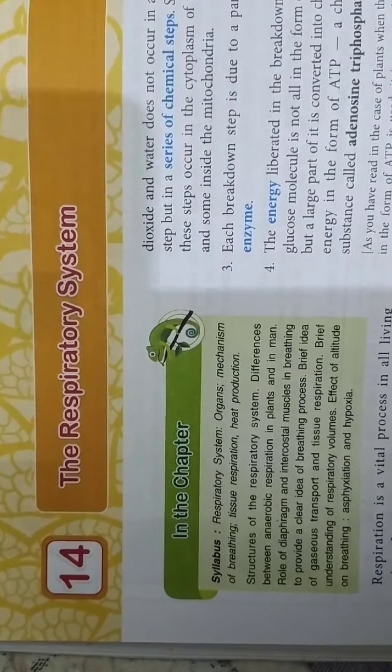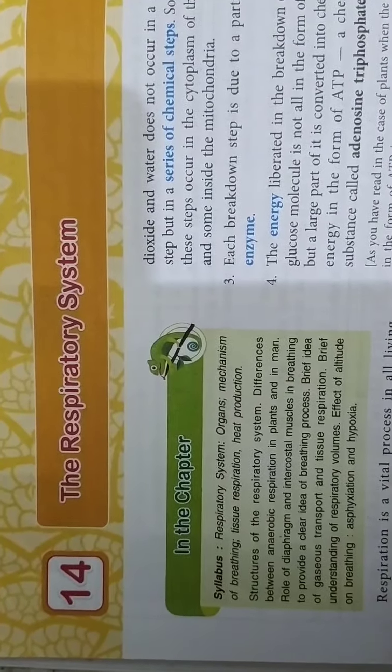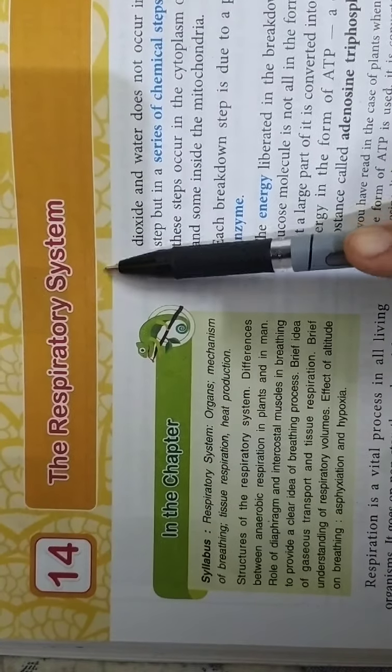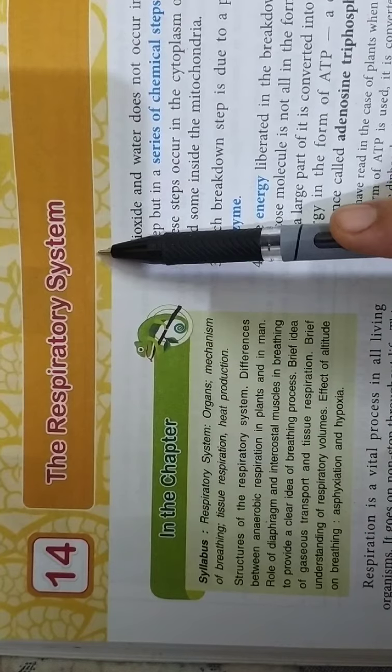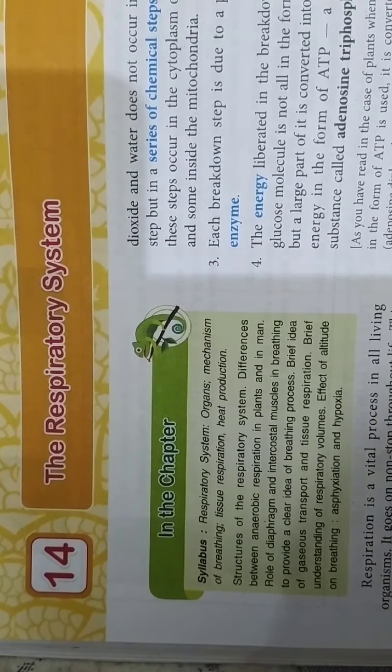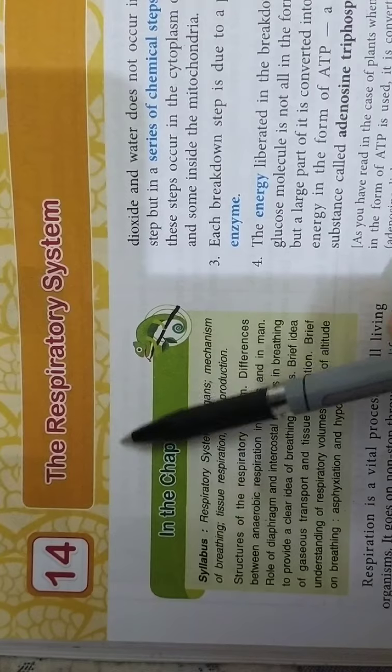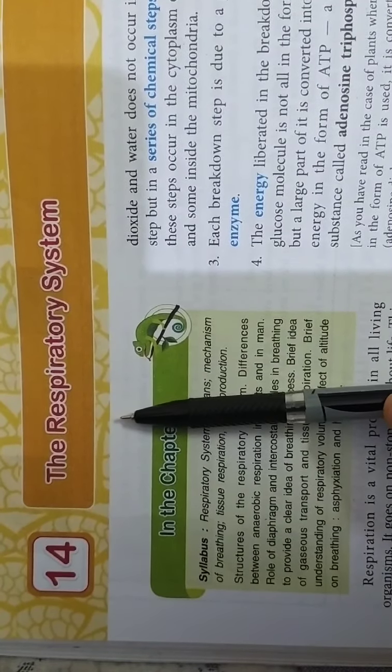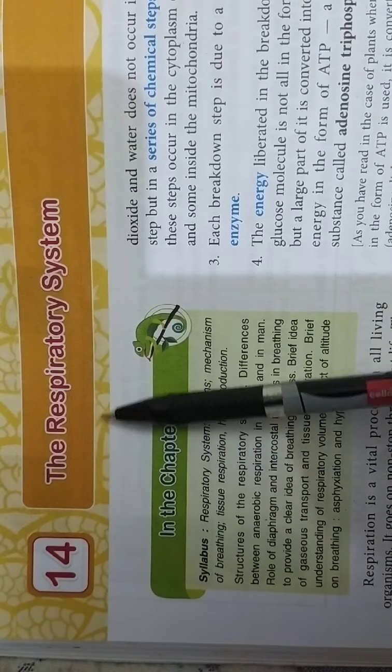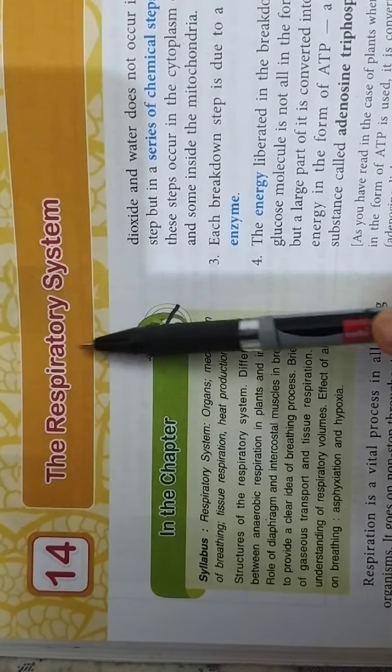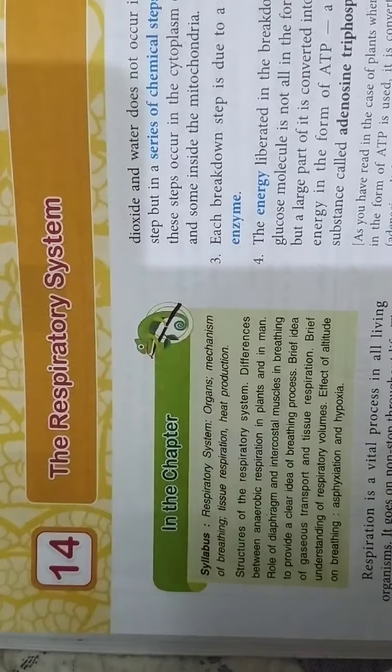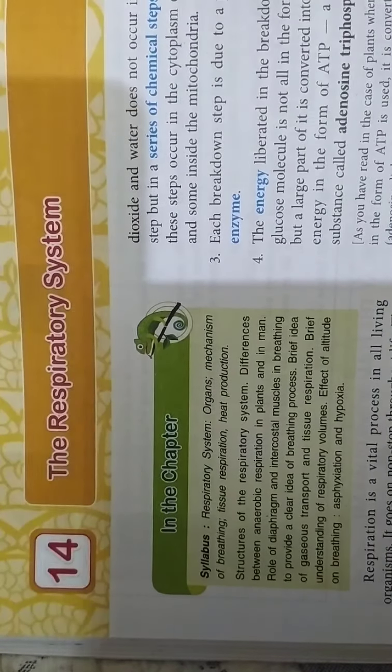This chapter describes the various organs involved in respiratory system in human beings. Although we have discussed respiration in chapter number 7 where we talked about respiration in plants, this chapter deals with the system in human beings. But before that, the introduction part, the first two pages describe respiration again.